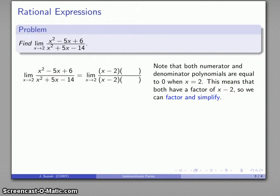So I know the numerator has a factor of x minus 2, and the denominator also has a factor of x minus 2. So once I know the one factor, it's a lot easier to figure out what the other factor is.